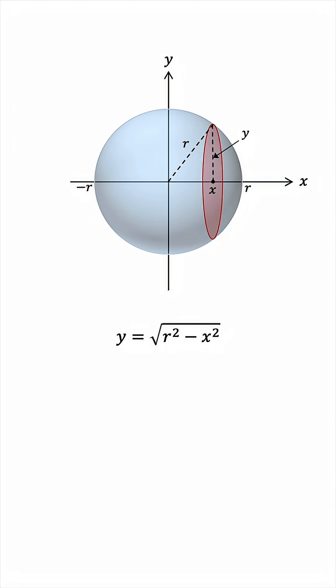And now we'll find the volume of the sphere by adding up all of the differential volumes of the slices. Think of dV as A of x dx, where A of x is the cross-sectional area of this slice, which is pi y squared, and dx is a differential thickness along the x-axis.